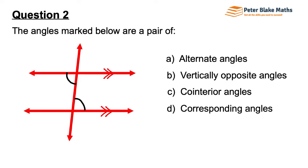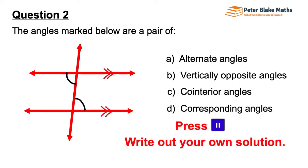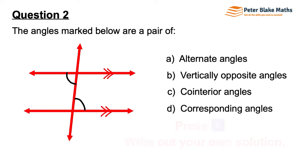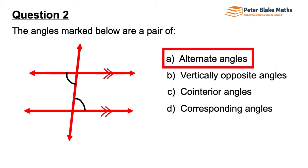Question 2. The angles marked below in black are a pair of alternate angles, vertically opposite angles, co-interior angles, or corresponding angles. These are alternate angles. I like to think of them as being on alternate sides of that single, almost vertical, transversal line — we call it. So there are alternate angles.